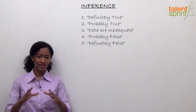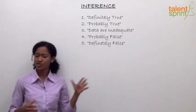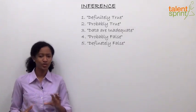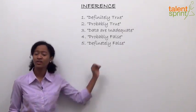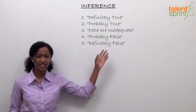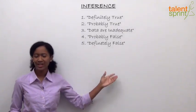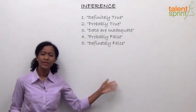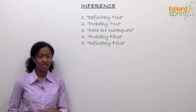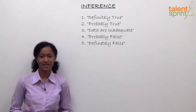So we understand what we need to do: we have a passage and four or five statements, and we have to determine if those statements fall under any of these options — definitely true, probably true, inadequate data, probably false, or definitely false. Let's go ahead and look at our first passage.